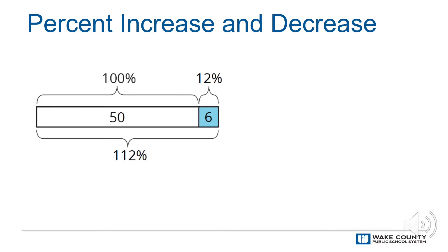This is a 12% increase because six divided by eight is 0.75. They now have 14 students, which is 175% of the starting amount.